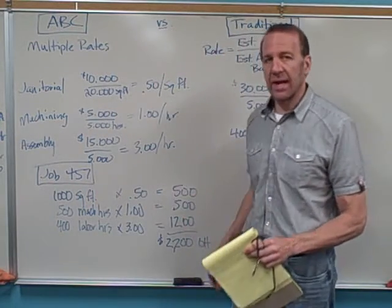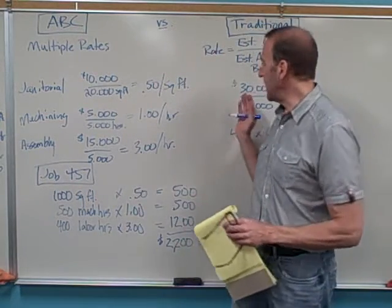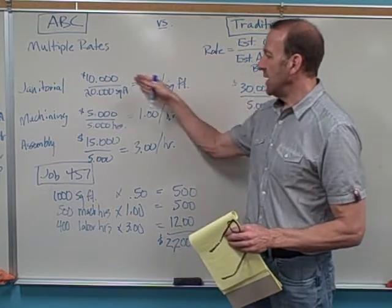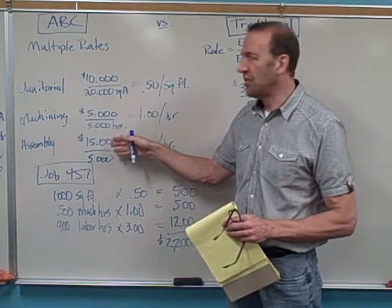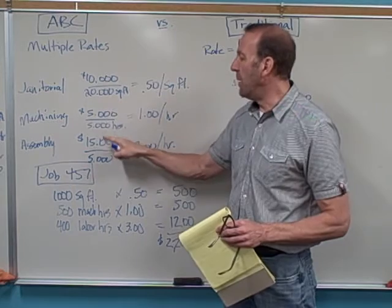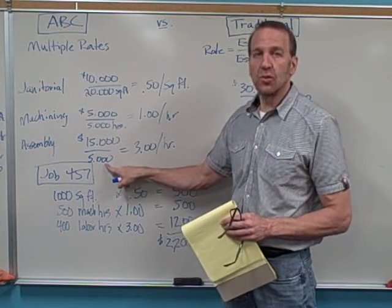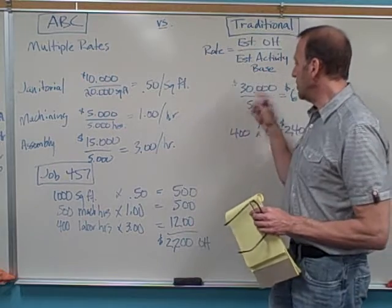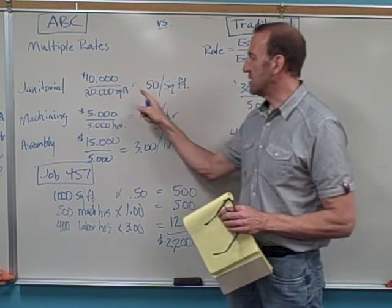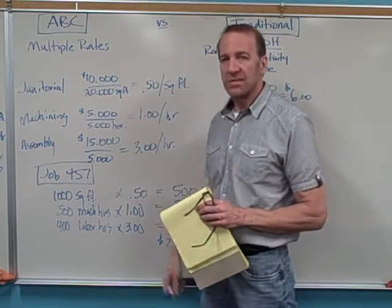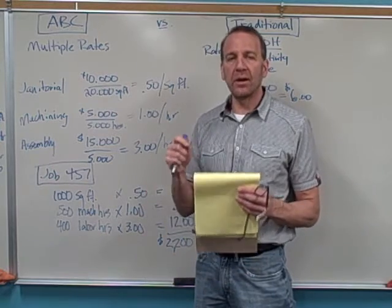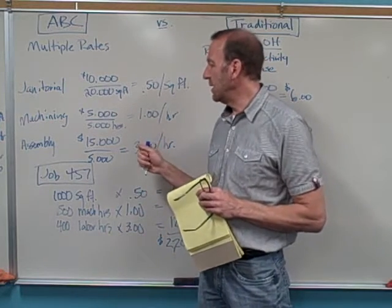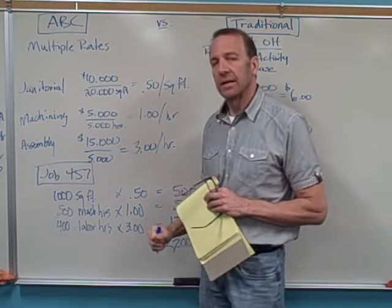This one generally is going to be more accurate because we're breaking down our overhead into more specific pools and allocating it on a better cost driver, whatever's driving this, and better activity base than just one huge pot of money. We're using separate activity bases that are better useful in allocating the overhead in that area.